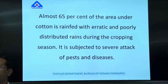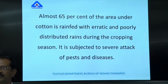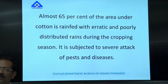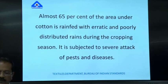Almost 65 percent of the area under cotton cultivation is rain-fed, with erratic and poorly distributed rains during the cropping season. It is also subjected to pest problems. However, the rainfall deficit can be adjusted with artificial irrigation, so that is not a major problem.